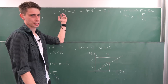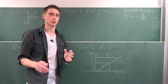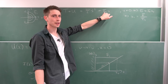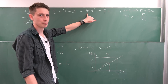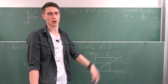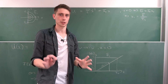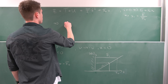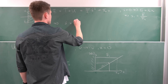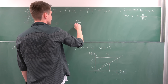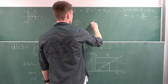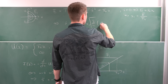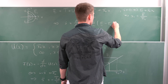Now we want to solve for the velocity from the energy equation. We subtract the potential term, multiply both sides by 2 over m, and take the square root, taking just the positive branch. We find that x dot equals dx/dt equals the square root of 2 over m times (E minus f0·x).